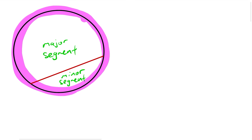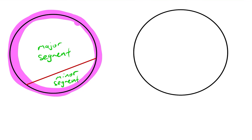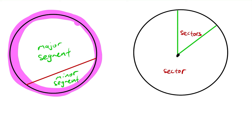Now there's another thing we need to know. Let me draw another circle. What if I cut a pizza slice in the circle? The dot here is the center. So now I have a pizza slice in there. Both these parts we call sectors. The one with the larger area is called the major sector, and the one with the smaller area — which is the pizza slice — is called the minor sector.